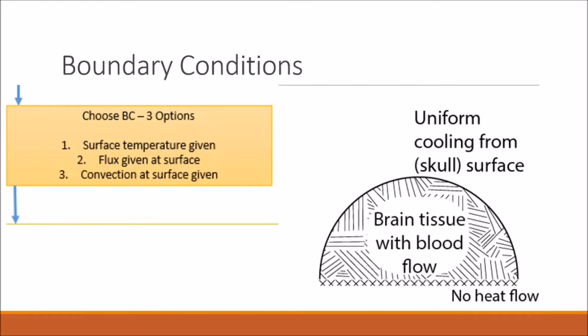Next we need to choose our boundary conditions. As our schematic indicates, there's no heat flow through the bottom surface of the brain, which includes our point of origin at r equals zero. So we can write the flux at a radius of zero is simply equal to zero as one of our boundary conditions.